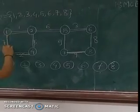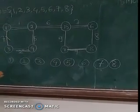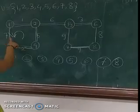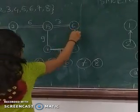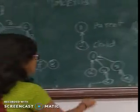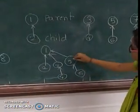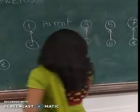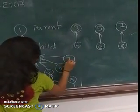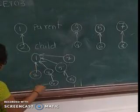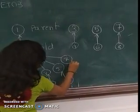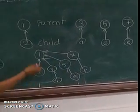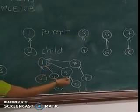The next edge forms a cycle, so we leave that edge. Next edge is 6 and 8. Node 6 has parent 5, and 5 has parent 1. Node 7 becomes a child of 1 because 1 has more children than 7. Node 1 had a higher weight (more children) and 7 had fewer, so we always consider 1 as the parent of all these nodes.